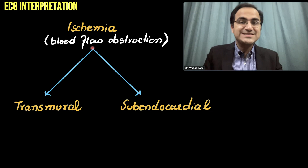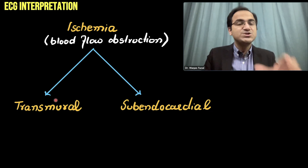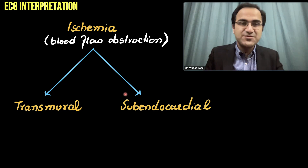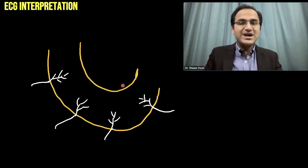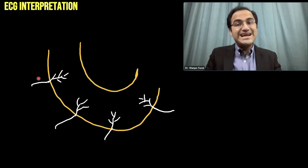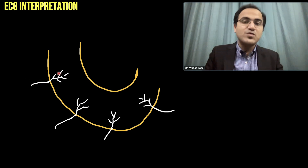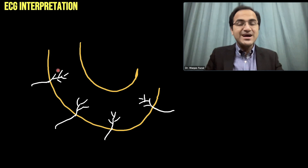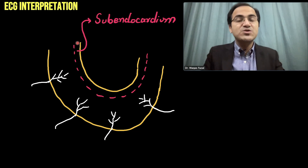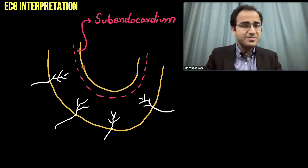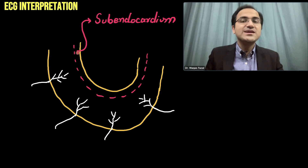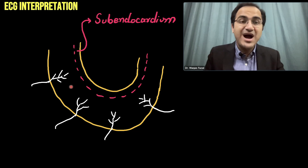Ischemia is blood flow obstruction. Ischemia in the heart can occur as transmural ischemia, in which the whole thickness of the heart wall is affected, or it can be subendocardial ischemia, in which the inner layer of the heart muscle is affected. Normally, blood supply comes from coronary arteries that enter the heart from outside towards inside. Therefore, the innermost aspect of the heart receives lesser blood supply compared to the outer aspect. Whenever there is ischemia, the initial damage is to the subendocardium — the innermost part of the heart.